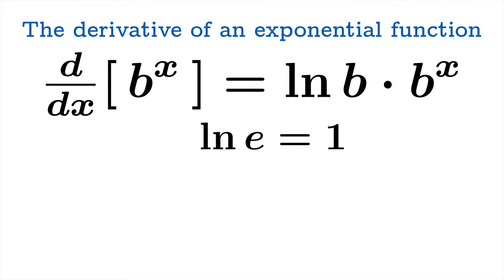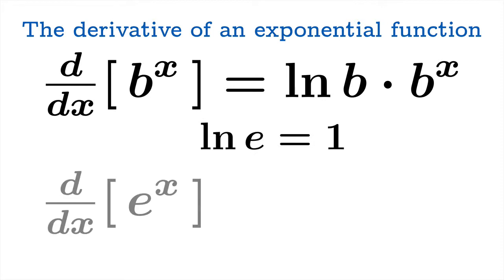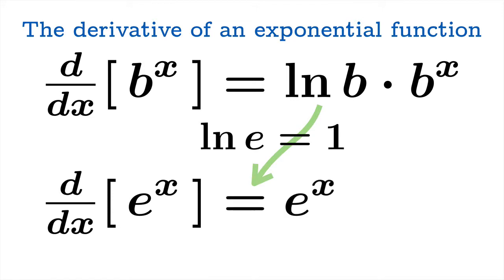Since ln(e) is 1, there's a very special case here. The derivative of e to the x with respect to x is ln(e) times e to the x, but ln(e) is 1, so this derivative is just e to the x. The exponential function e to the x has the very special property that it is its own derivative.